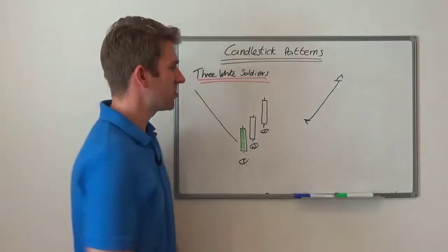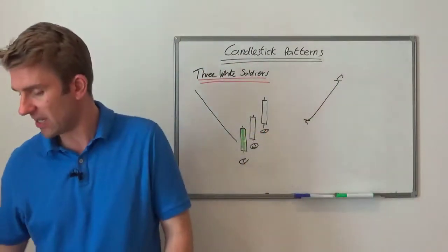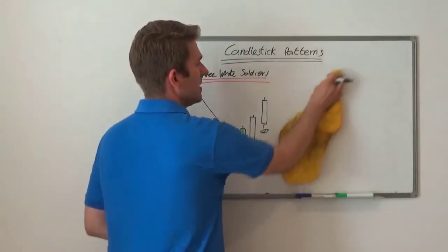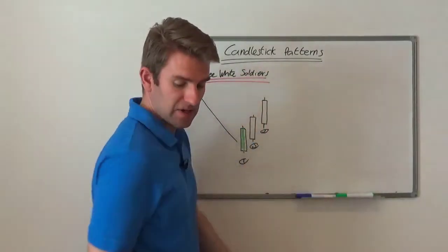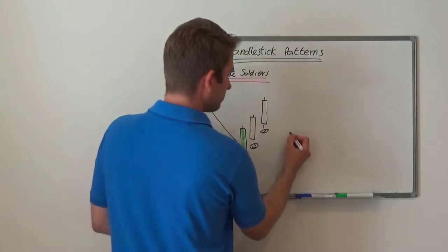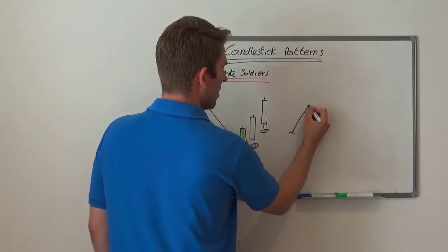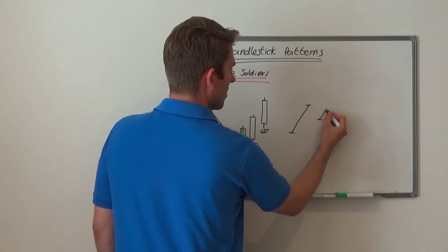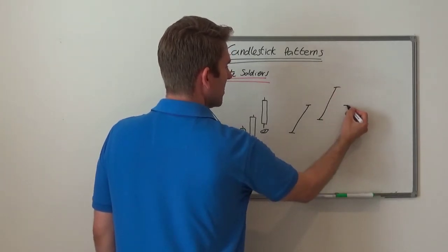So day two, let's redraw that intraday. This is kind of the intraday look of how these candles would be. So we've got day one here, we've gone from low to high, and that's day one. And then day two, we've gone from low to high again. And then from day three, we've gone from low to high again.